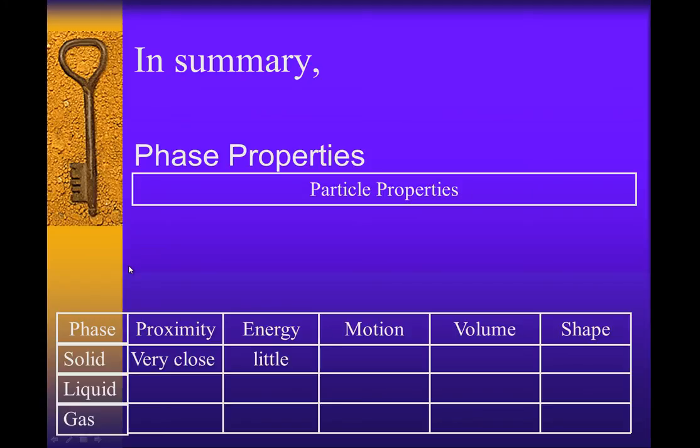The liquid—the particles are a little bit farther apart but they're still considered pretty close. A little bit more energy, so moderate. They move by rotational, which means they're spinning past each other constantly. The volume is definite but the shape is indefinite.